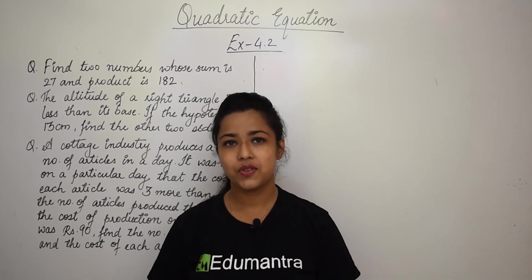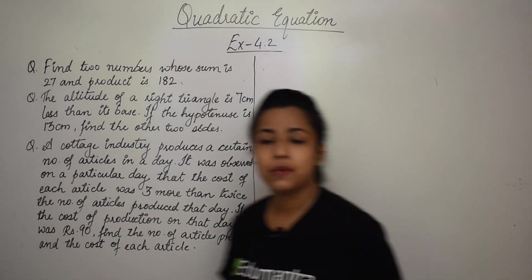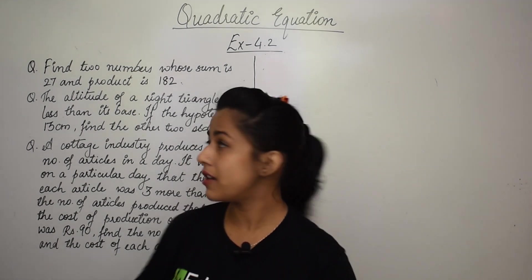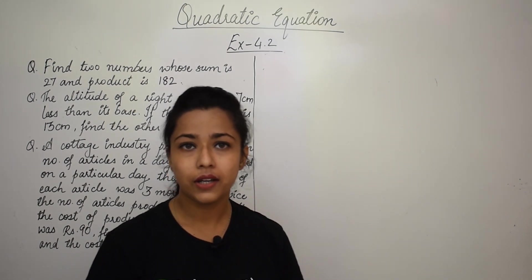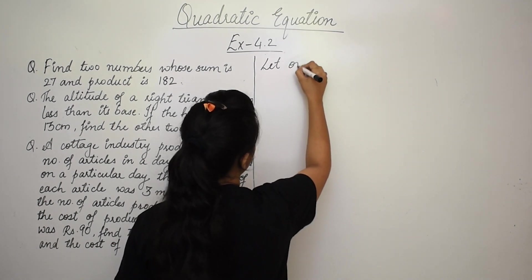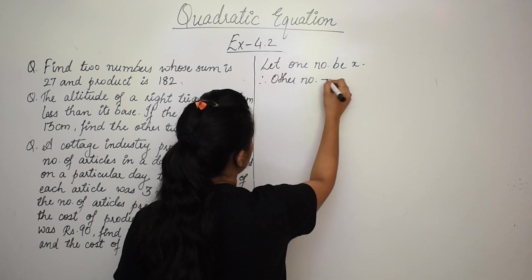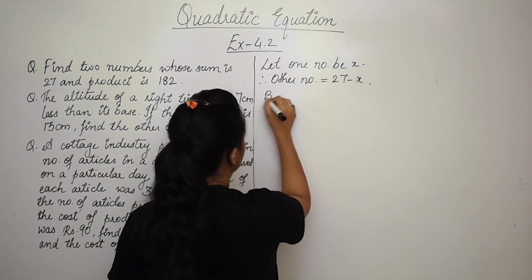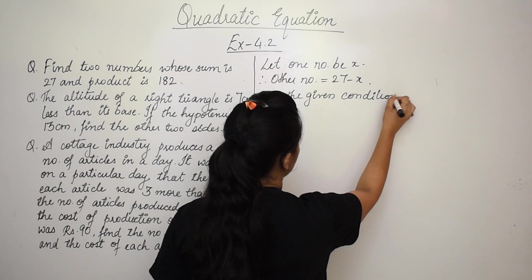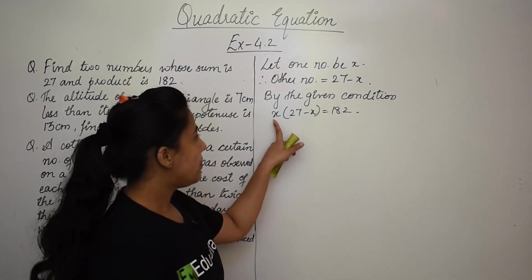The next question: find two numbers whose sum is 27 and product is 182. Let one number be x, so the other number will be 27 - x. By the given condition, their product x(27 - x) = 182. Expanding: 27x - x² = 182, which rearranges to x² - 27x + 182 = 0.